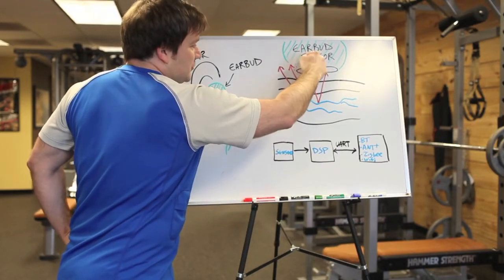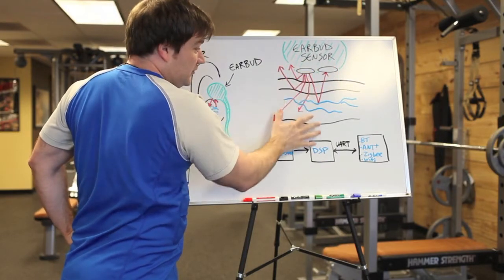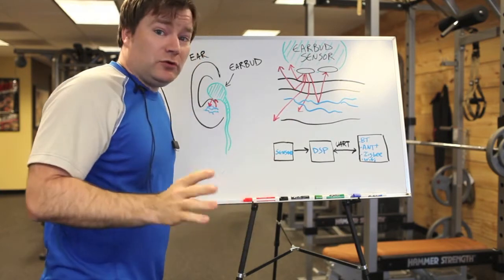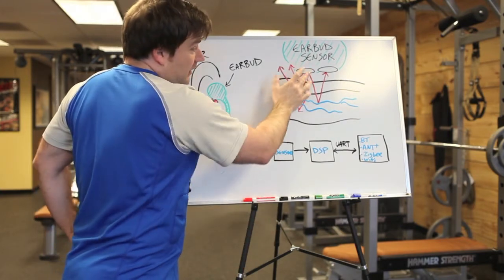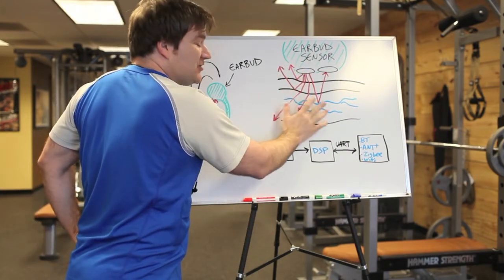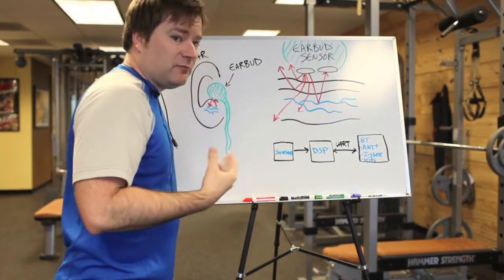You see, here's an earbud sensor shining light into the skin. And your skin has multiple layers to it. And also, how the light scatters in the skin and is collected by our sensor module.